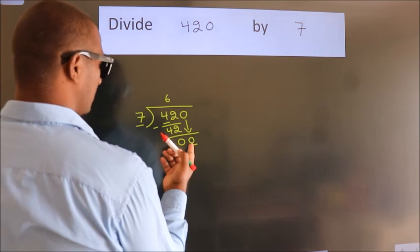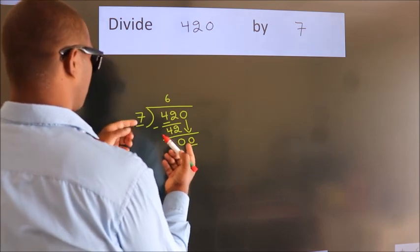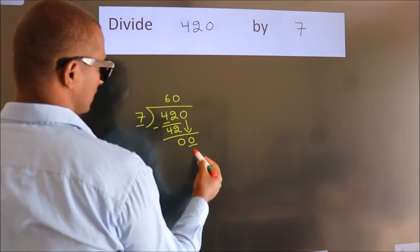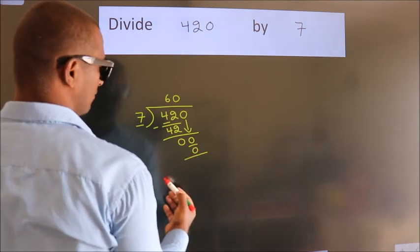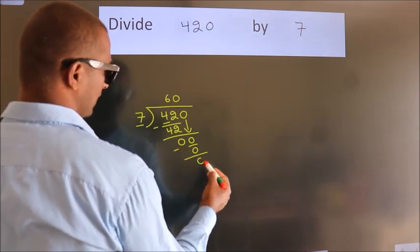When do we get 0? In the 7 table, 7 times 0 is 0. Now we subtract. We get 0.